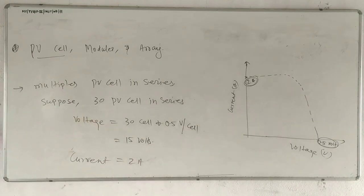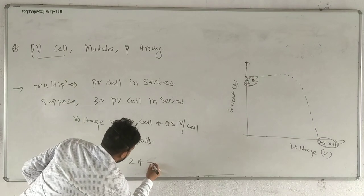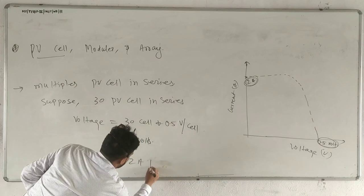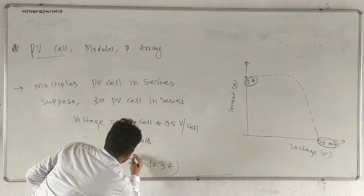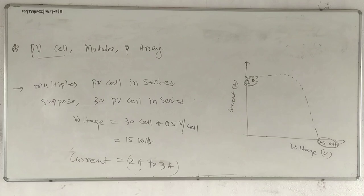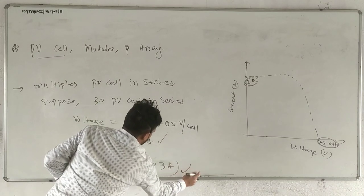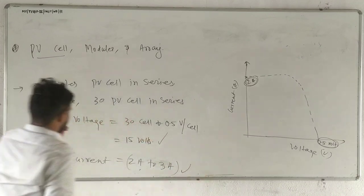Now the range of current generated by the PV cell is only 2 to 3 EPM. Since our PV cells are in series, on default, voltage will be increased and current will be constant.